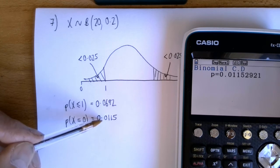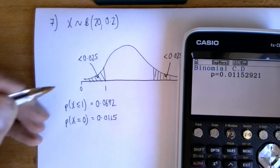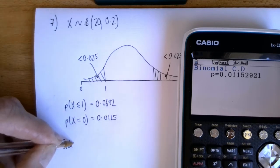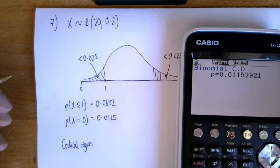critical region at the bottom end is when X = 0. So it's not a region at all—it's just one value.